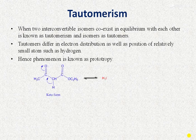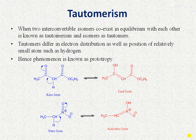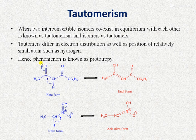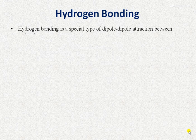Tautomerism is the phenomenon when two interconvertible isomers (tautomers) coexist in equilibrium. Tautomers differ in electron distribution and in the position of a small atom such as hydrogen (prototropy). For example, in keto-enol tautomerism, an alpha hydrogen shifts to form a double bond and then attaches to oxygen, converting the keto form to the enol form. Similarly, nitro-acid nitro tautomerism involves an alpha hydrogen shifting to an oxygen atom.